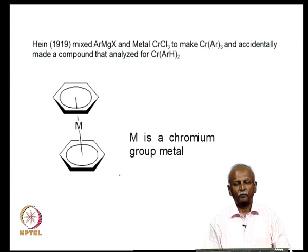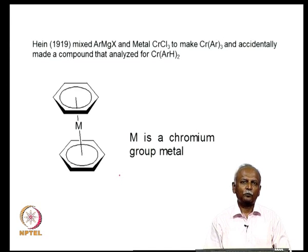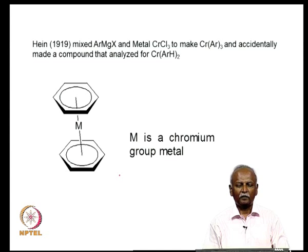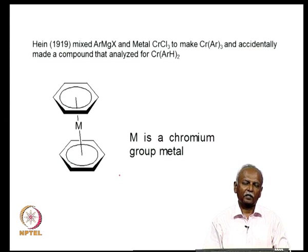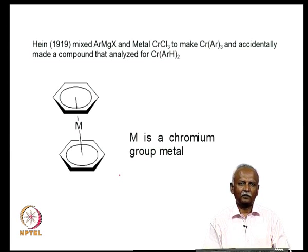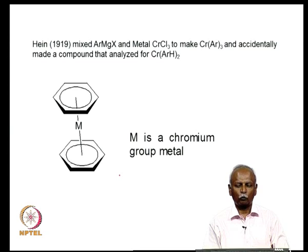The first time someone made a sandwich complex, although not intentionally, was as early as 1919. That is when Hein mixed a Grignard reagent and chromium trichloride. He isolated a compound that analyzed for bis-benzene chromium. There are a lot of complexes where the two arene rings or pi layers are surrounding a metal atom, and the metal atom happens to be in the chromium metal series. We will see later why this is the case and why it is stable when you have the chromium group metal atom between the two sandwich slices.